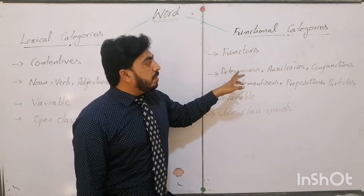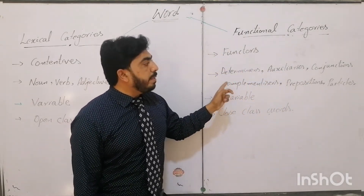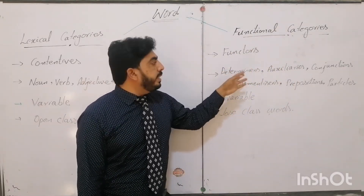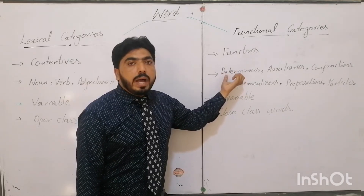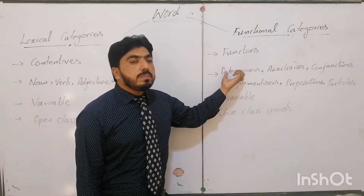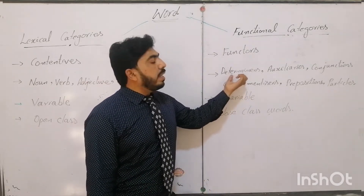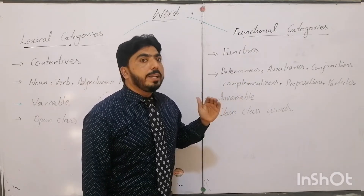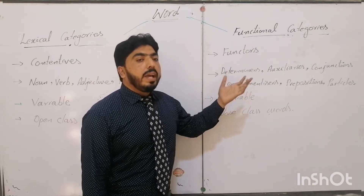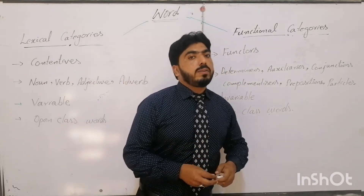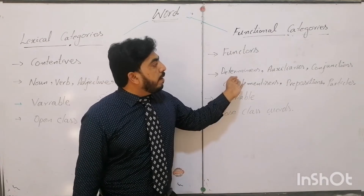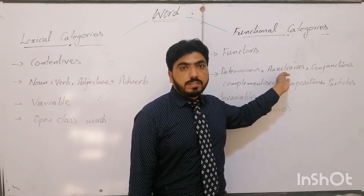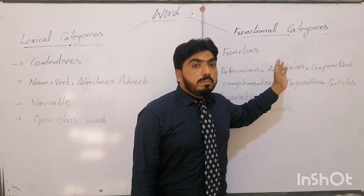We include determiners, auxiliaries, conjunctions, complementizers, prepositions and particles under the heading of functional categories. We will discuss in detail what we mean by determiners — how determiners are further divided: articles are part of determiners, possessive pronouns such as 'my book' are also part of determiners, and demonstrative pronouns like this, that, these, those are also part of determiners. Similarly, how auxiliaries are defined, what are the primary auxiliaries, what are the secondary auxiliaries, and how these are different from modal verbs.